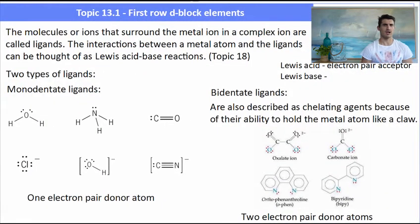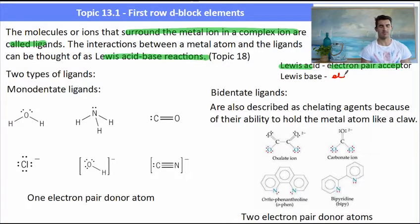So the molecules that surround the metal ions in a complex are called ligands. The interactions between a metal atom and a ligand can be thought of as a Lewis acid-base reaction. Now a Lewis acid is an electron pair acceptor. A Lewis base is an electron pair donor. This comes up in topic 18 of the higher level course but it's just something to think about here. Our ligands will be Lewis bases, our metals will be Lewis acids.